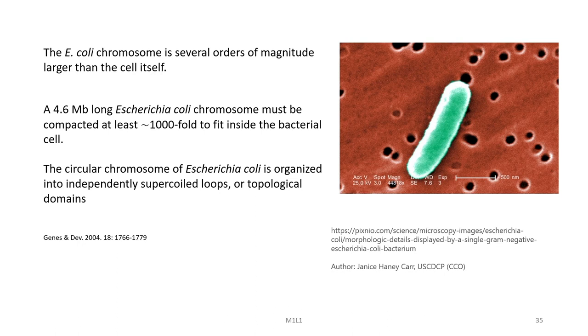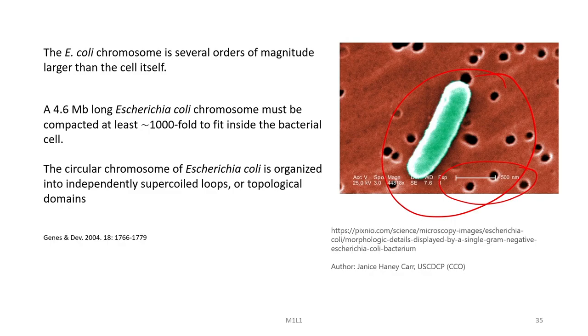Let us go into the features of the E. coli chromosome once more. The E. coli chromosome is several orders of magnitude larger than the cell itself. You can see in this figure the shape of E. coli and a scale for comparison. Into this small-sized organism, a 4.6 Mb long E. coli chromosome must be compacted and packaged — this is done by compacting it at least 1,000-fold to fit inside the bacterial cell. The circular chromosome of E. coli is organized into independently supercoiled loops or topological domains in order to fit into this small-sized organism.